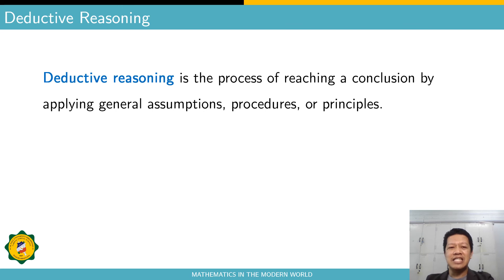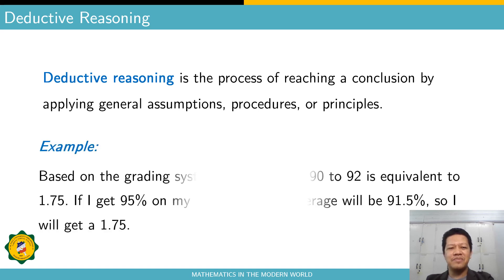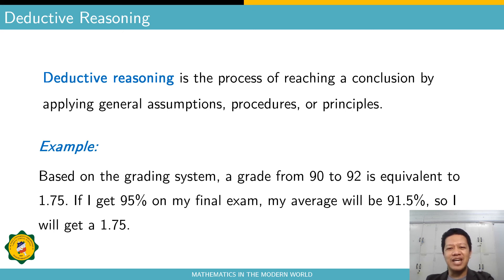The second type is deductive reasoning. Deductive reasoning is the process of reaching a conclusion by applying general assumptions, procedures, or principles. An example: based on the grading system, a grade from 90 to 92 is equivalent to 1.75. If I get 95% on my final exam, my average will be 91.5%, so I will get a grade of 1.75.